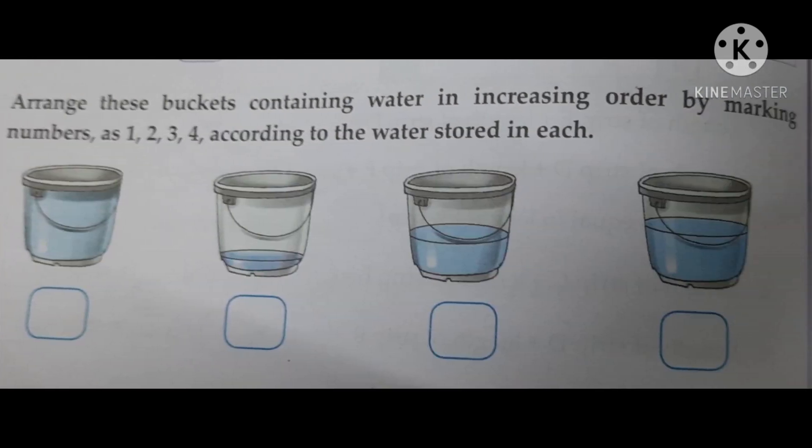Now, arrange these buckets containing water in increasing order by marking numbers as 1, 2, 3, 4 according to the water stored in each. You have to mark 1, 2, 3, 4 in increasing order.